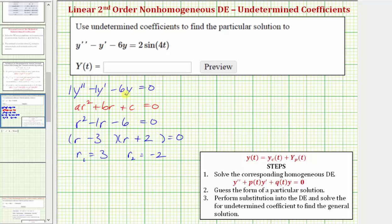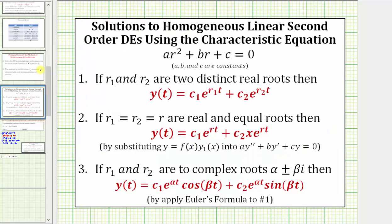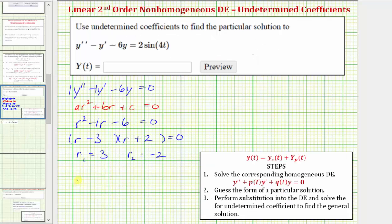the solution to the homogeneous differential equation gives us the complementary function for the non-homogeneous equation. So y sub c of t equals c sub one times e raised to the power of three t, plus c sub two times e raised to the power of negative two t.